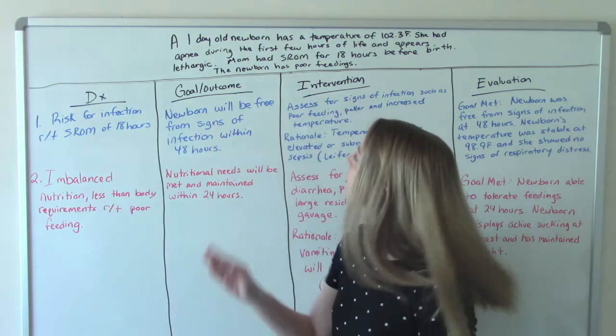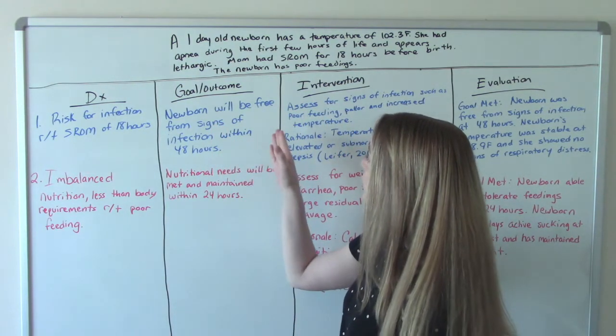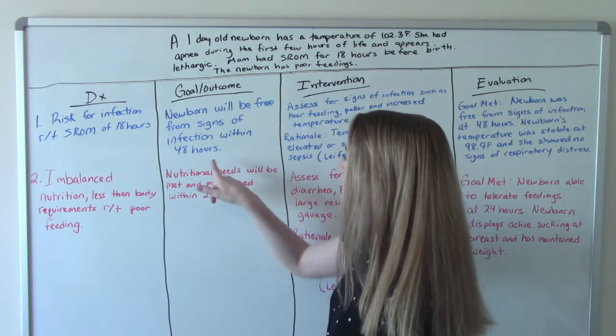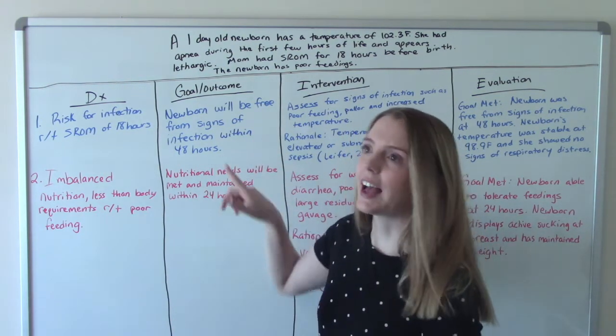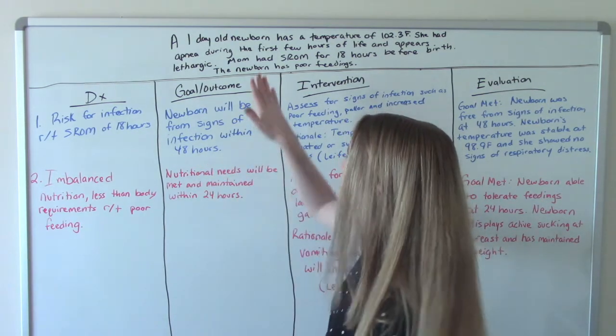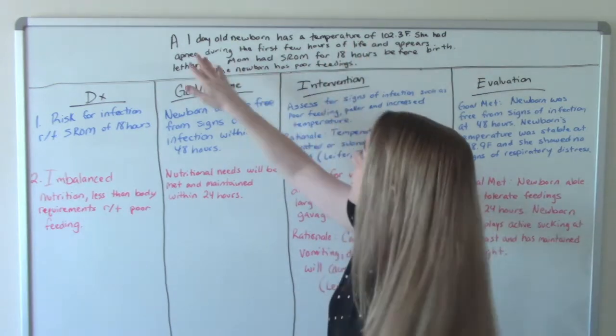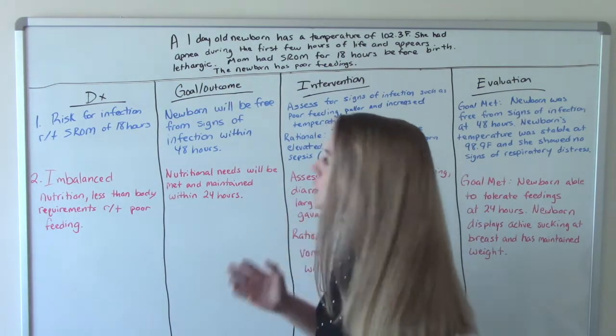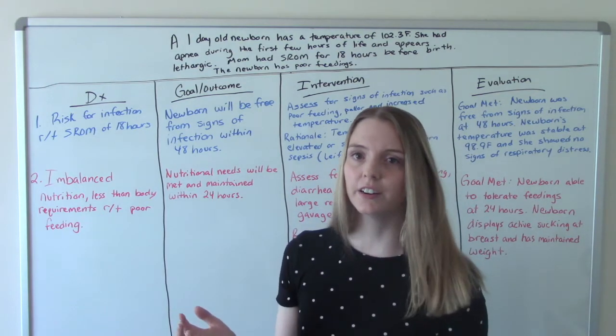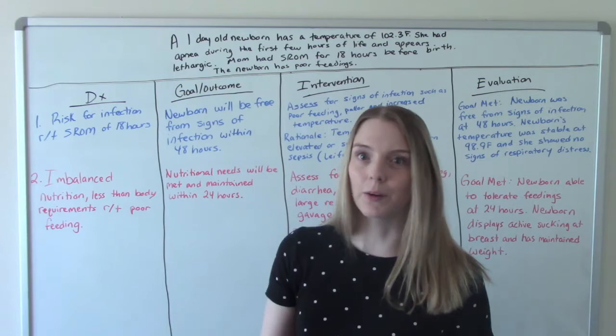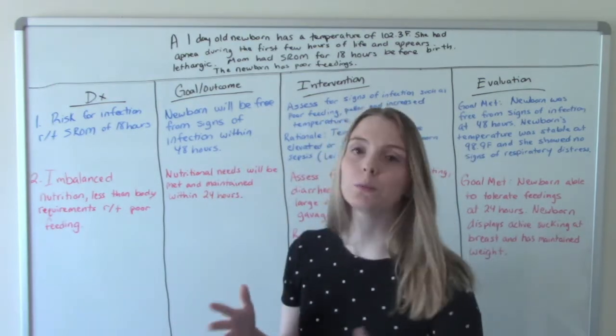Our goal will be the newborn will be free from signs of infection within 48 hours. And I put 48 hours and not by the end of the shift or anything like that because this is a lot more realistic. Baby's already showing signs. It has the fever. It's having trouble breathing. It's lethargic. It's not eating well. So it's already showing those signs of infection. We don't expect them to be fixed right away within an 8 to 12 hour shift. So 48 hours is a little bit more reasonable.